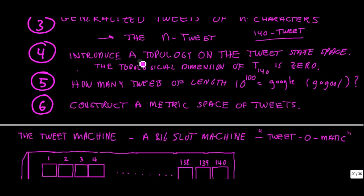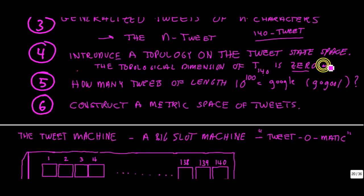We'll find that we can introduce three different topological spaces on the tweet state space. The topological dimension of these spaces — they're all discrete topological spaces — one can assign a dimension of zero to a discrete topological space because the elements can be put in a one-to-one correspondence with the natural numbers. We talked about a 140-dimensional spreadsheet, but because it's a discrete collection of cells, the topological dimension is zero.